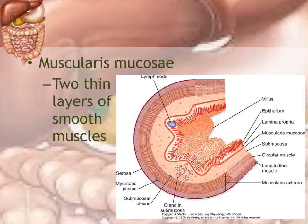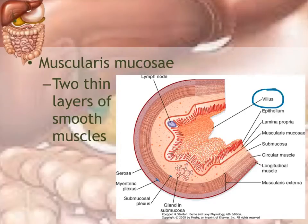The mucosa layer also has two thin layers of smooth muscle that help move materials along. The villi, which increase the surface area of the intestinal wall, are also part of the mucosa layer.